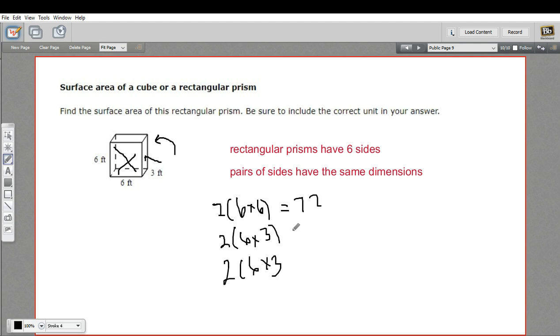6 times 3 is 18. Times 2 is 36. And this one is also 36. And then we add all of that together, and we get 144.